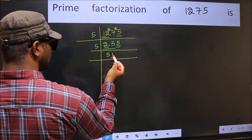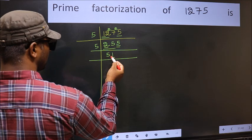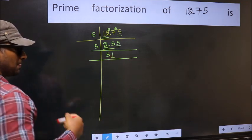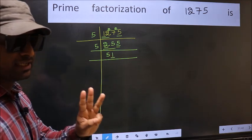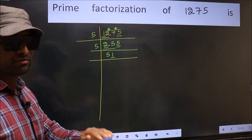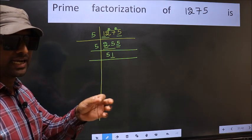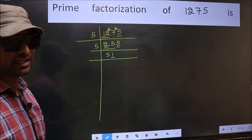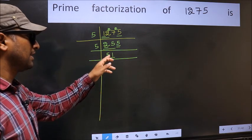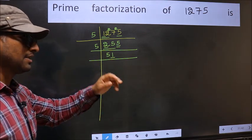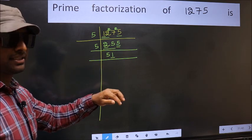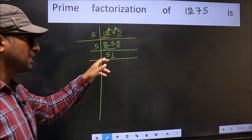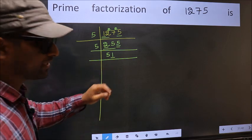Now last digit is 1, so not divisible by 2. Next prime number is 3. To check divisibility by 3, we should add the digits. What I mean is, 5 plus 1 equals 6. Is 6 divisible by 3? Yes, so this number is also divisible by 3. So take 3 here.